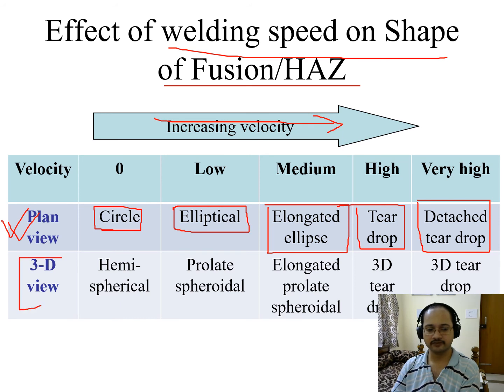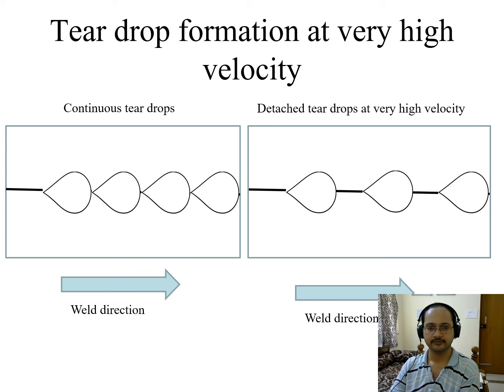Whereas in case of 3D, this circle becomes a hemisphere, this is a prolate spheroid, elongated prolate spheroid, 3D teardrop, and 3D teardrop as well for very high velocity. So here it makes it clear - for very high velocity this is continuous teardrop whereas this is detached teardrop, so here the teardrop is detached. And from left to right is the weld direction.